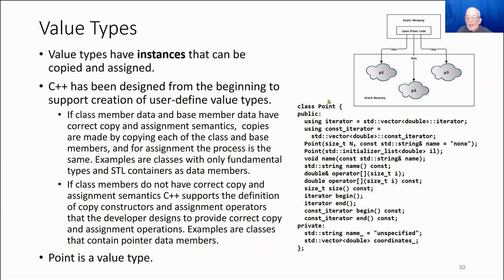So C++ was designed from the beginning to support the creation of user-defined value types. For a class like point whose data members are a string and a vector, these both have correct copy and assignment semantics. They were designed to be that way. All of the containers in the standard template library, like vector, have correct copy and assignment semantics. And string is the same thing. It has correct copy and assignment semantics.